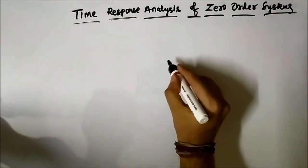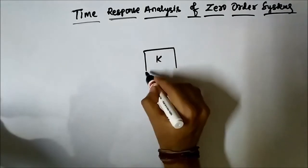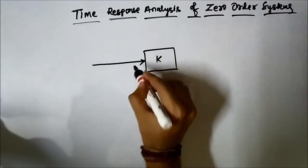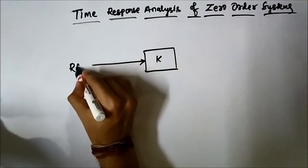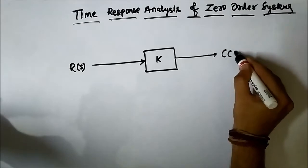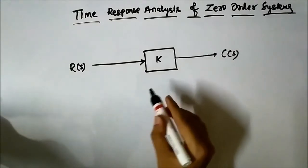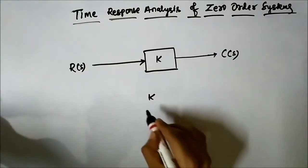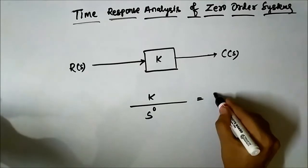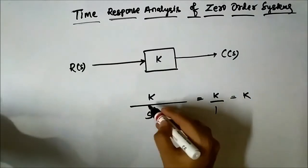A zero order system is simply a block having a constant gain k. We can represent it as a block where the input in the s domain goes in and the output in the s domain comes out. This block can be written as k divided by s to the power 0, which equals k divided by 1, which is simply k.